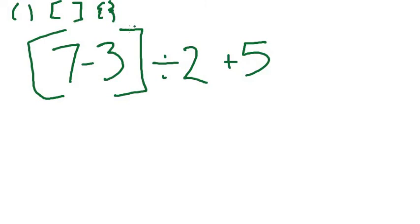Remember, if there weren't these brackets here, we would be doing this division first and that could be a tricky one. 3 divided by 2 would not give us a whole number. However, let's see what happens when we do this first. 7 minus 3 is 4 divided by 2 plus 5.